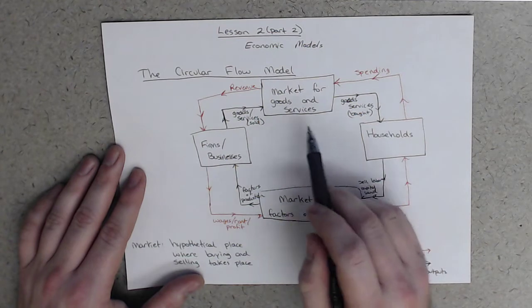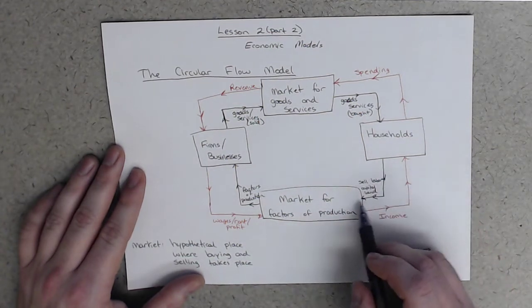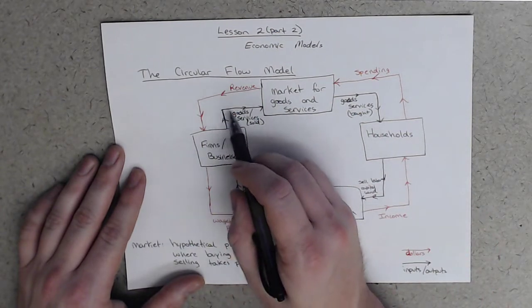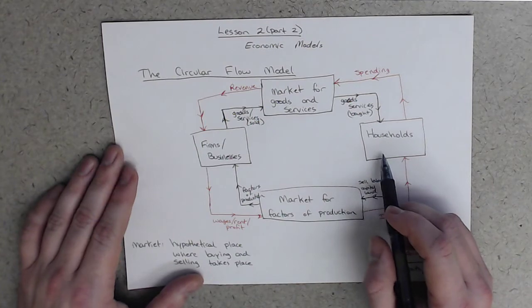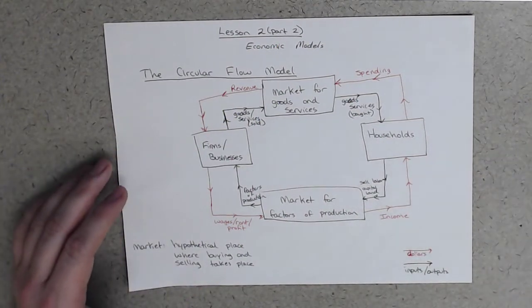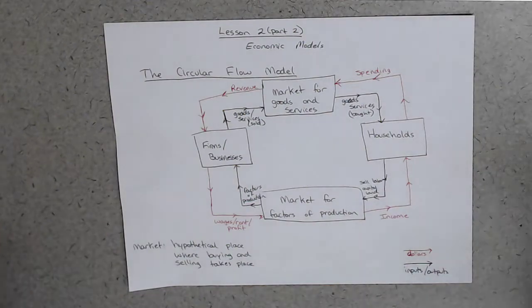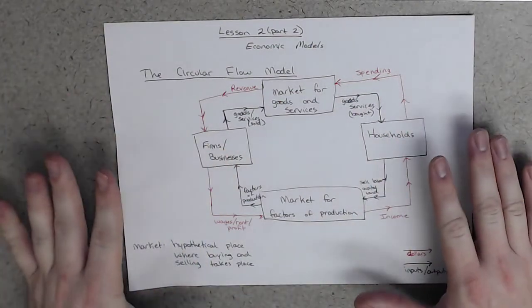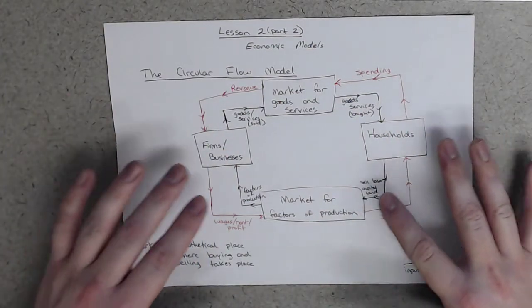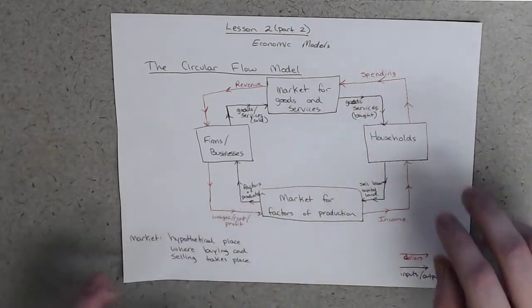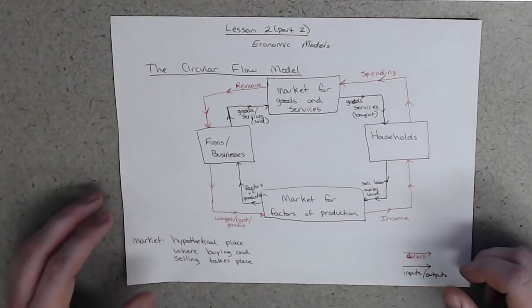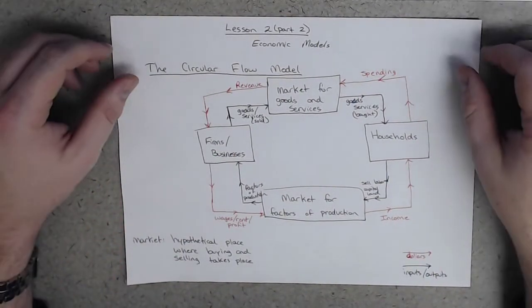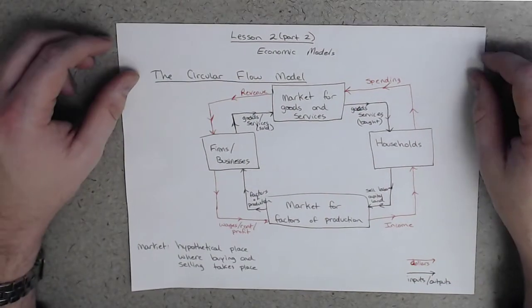At the same time, we see workers produce a good by going through here, which is then sold and purchased by households. And so the crazy thing here is that even though we've grossly oversimplified things, we've said the whole world can be drawn basically using four boxes and two lines going in opposite directions. It's fairly accurate. It seems to describe a lot of the world in which we live.